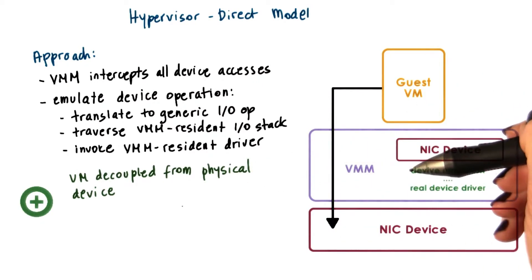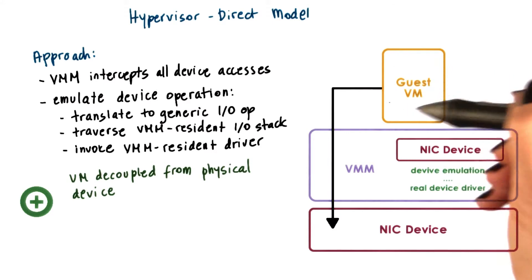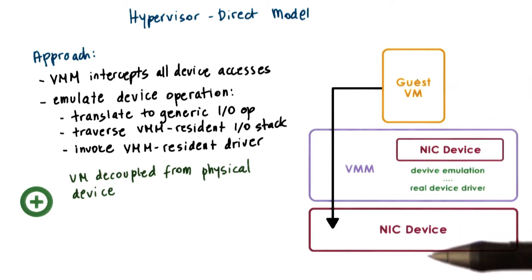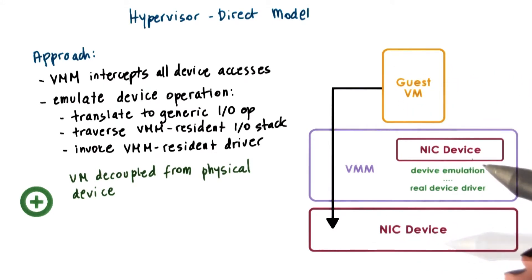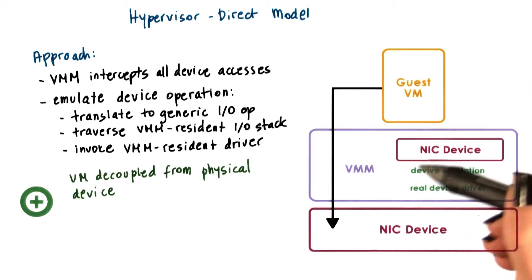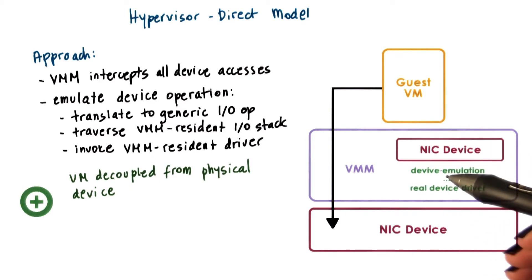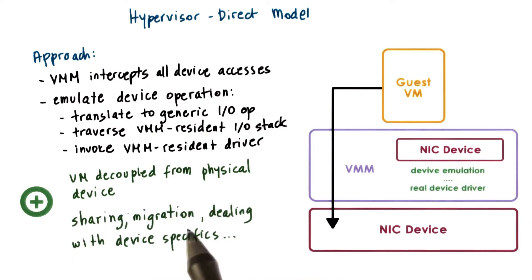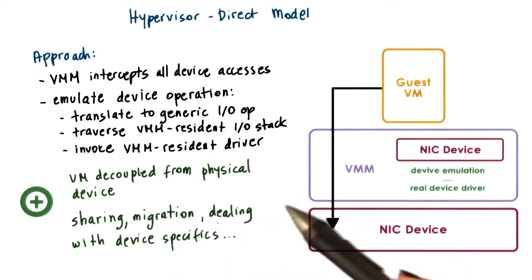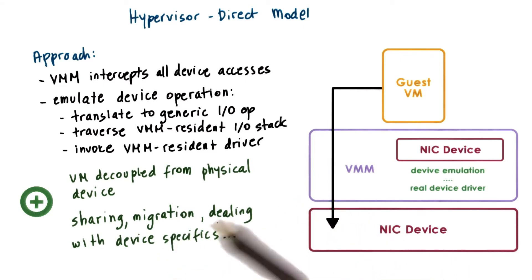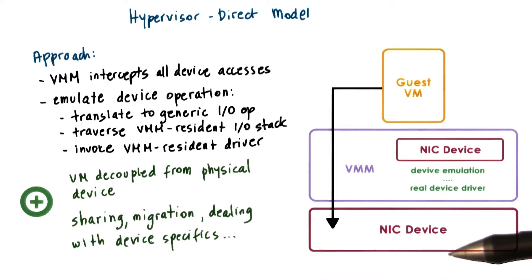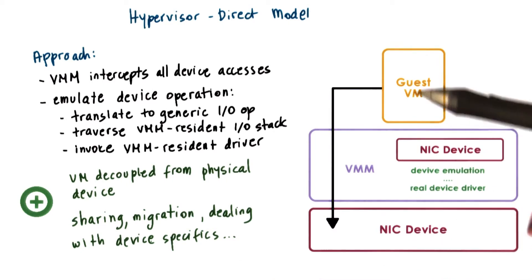A key benefit of this approach is that the virtual machine is again decoupled from the physical device. Any translation or emulation will be performed by the hypervisor layer. Because of that, operations such as sharing and migration, or requirements around device specifics, all become simpler.